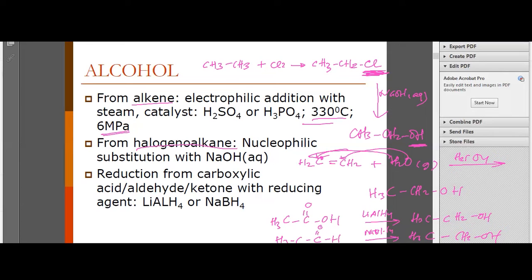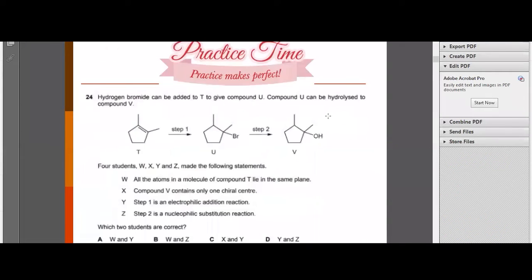So once again, there are three ways to form alcohols: from alkene, from halogenoalkane, and from more oxidized compounds such as carboxylic acids, aldehydes, or ketones via reduction process. Let's answer this question. What's the answer?